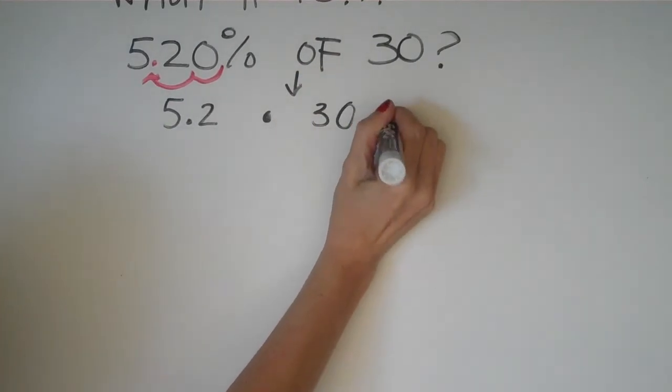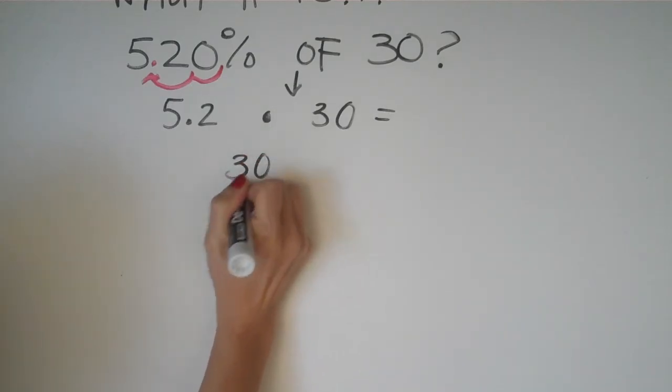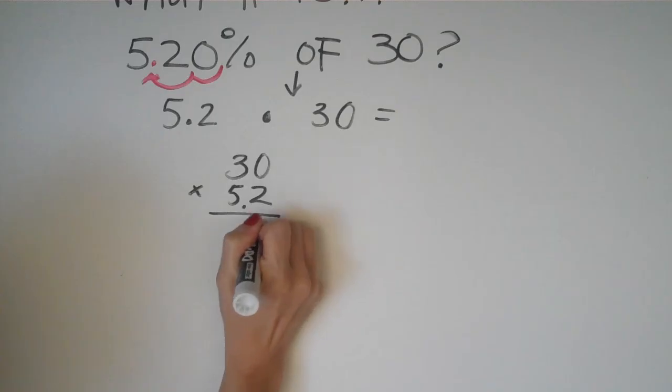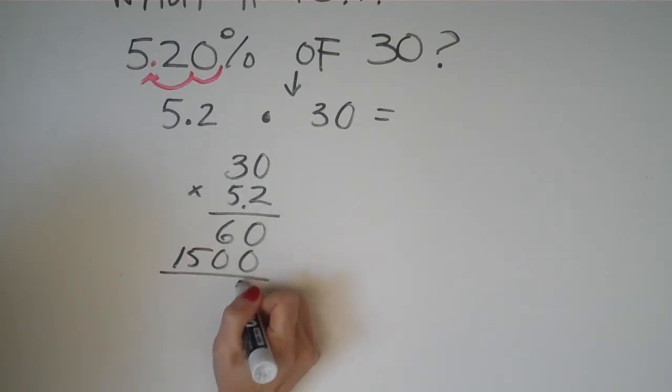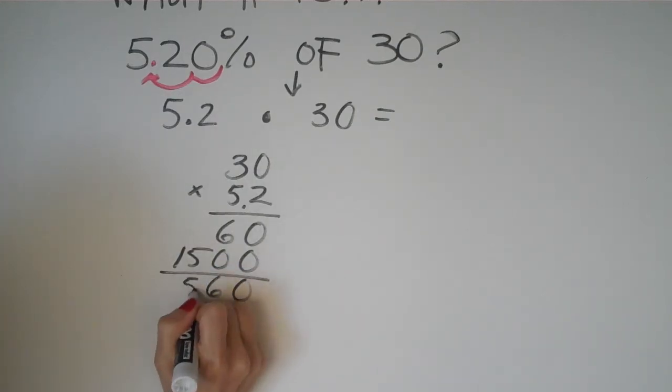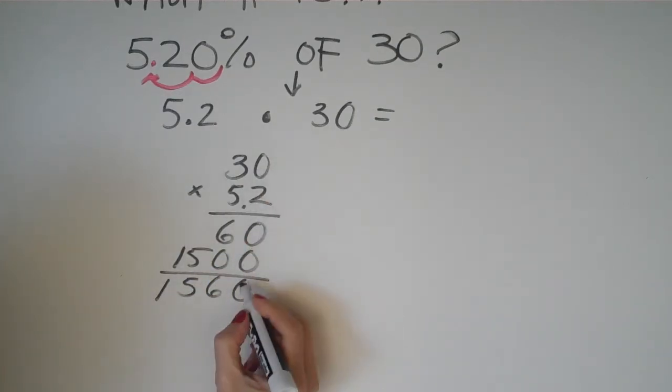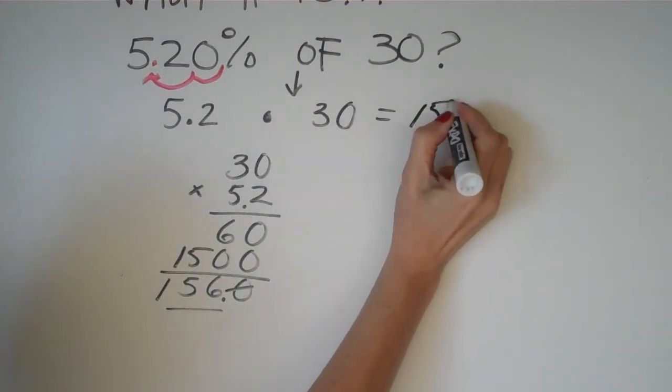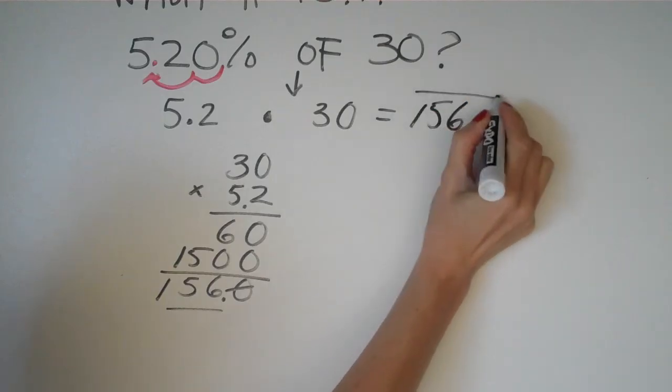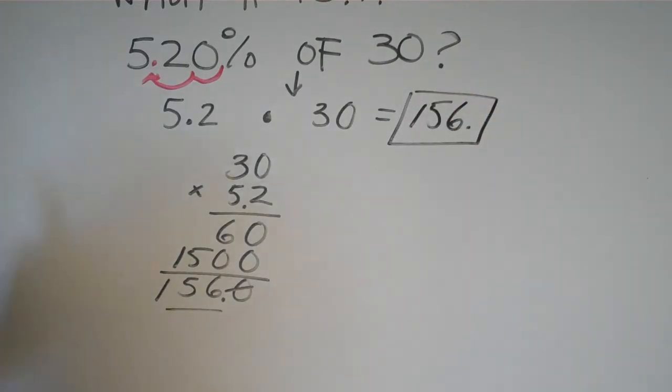This is zero, six, zero, zero, this is 15. We add it up, go one place over, and our answer is 156. And that's it, pretty simple.